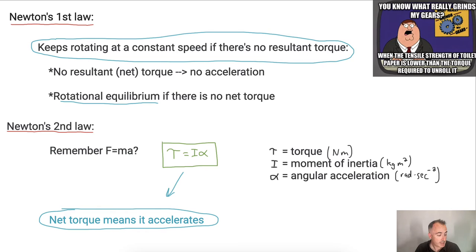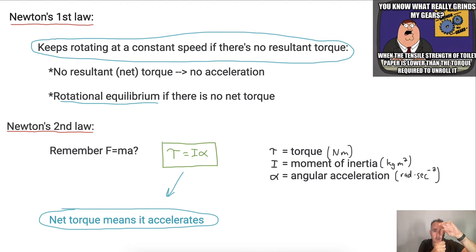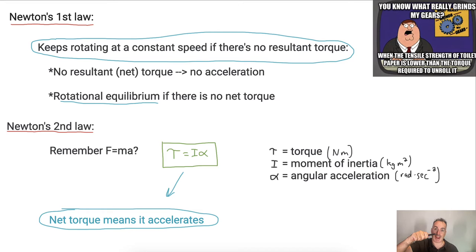Now Newton's third law — every action has an equal and opposite reaction. This applies to torque too: if you apply some torque, then some torque is applied back to you. For example, in space, if an astronaut tries to use a wrench to tighten a bolt, and they're just floating there, what happens is instead of turning the bolt, they end up rotating themselves. So astronauts have to brace themselves and hold on to something. That's the rotational equivalent of Newton's third law.